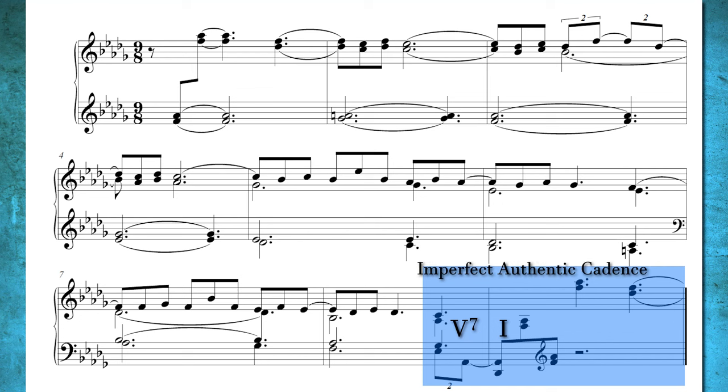This authentic cadence serves as a foundation for establishing the main theme. Debussy initiates with an Ab7 chord, then transitions to a Db chord with the top note being Ab. This subtle yet effective use of an imperfect authentic cadence underscores Debussy's genius in employing seemingly simple elements to create iconic musical moments. It not only reintroduces the main theme, but also solidifies the tonic key.